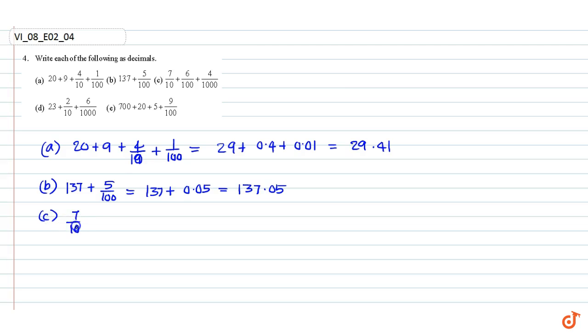Part (c): 7 by 10 plus 6 by 100 plus 4 by 1000. This is equal to 0.7 plus 0.06 plus 0.004, which is equal to 0.764.